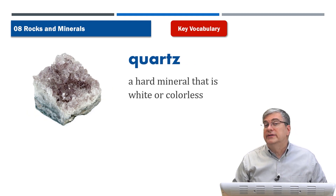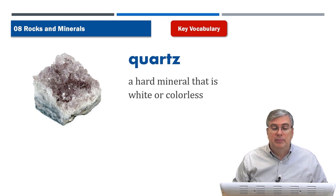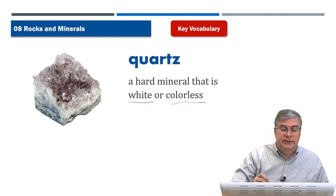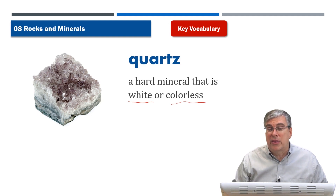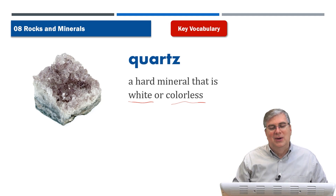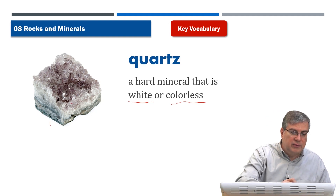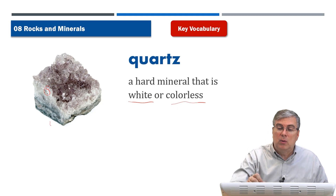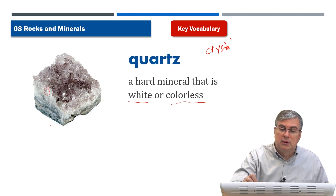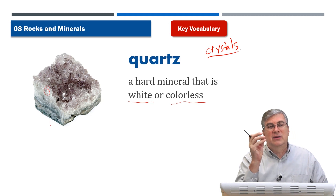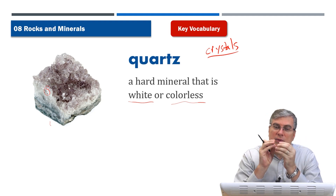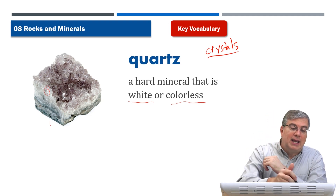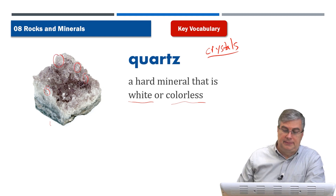Next we have quartz. Quartz is another type of mineral — a hard mineral that is white or colorless. Many people use quartz to decorate things, but we also use it for something else that we'll talk about in the reading passage. Quartz forms crystals. Many minerals form crystals based on their molecular structure, and here we can see quartz crystals in this rock.